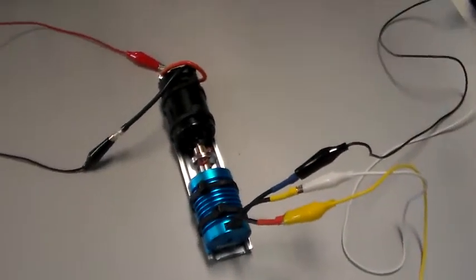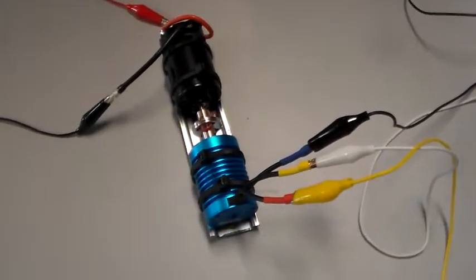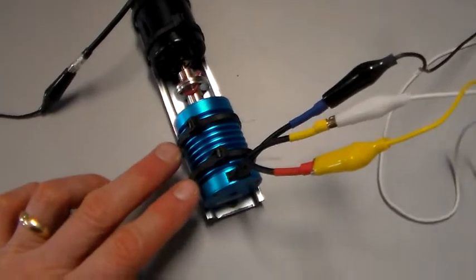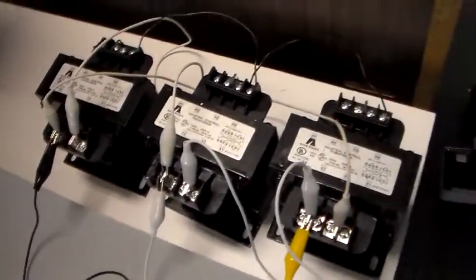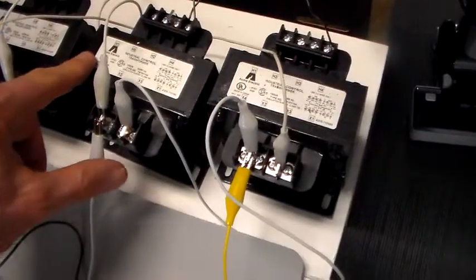And what we're going to be doing here is taking the AC three-phase power that we get out of this motor, which we're actually using as a generator, and we're going to step that up in voltage. And to do that, we need a bank of transformers. So here we have standard control power transformers.